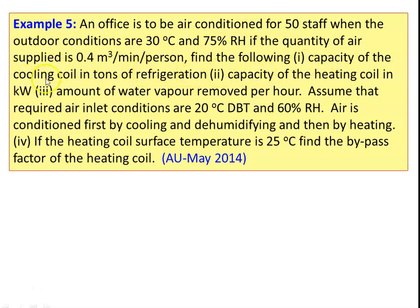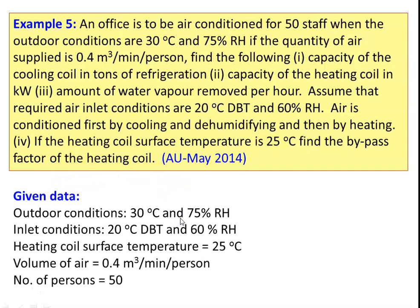Find the following: capacity of the cooling coil in tons of refrigeration, capacity of the heating coil in kilowatts, and amount of water vapor removed per hour. Assume that the indoor inlet conditions are 20 degree dry bulb temperature and 60 percent relative humidity. The air is conditioned first by cooling and dehumidifying, then by heating. If the heating coil surface temperature is 25 degree Celsius, find the bypass factor for the heating coil.